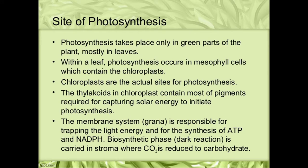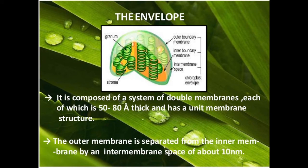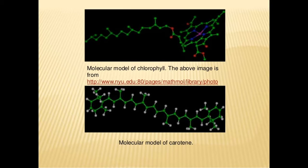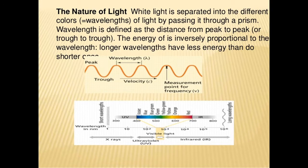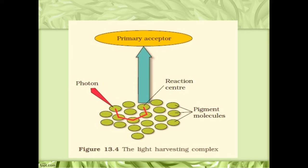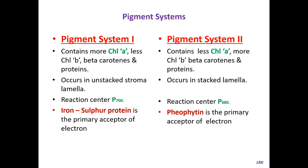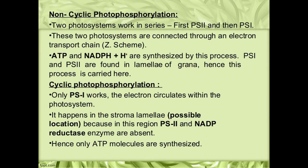Good morning, this is Ramesh Kumar Lalkota, Assistant Professor of Botany, MBS Government Arts and Science College Autonomous, Mahbubnagar. We are discussing the topic photosynthesis in plants. Till now we saw the structure of chloroplast, types of chlorophylls, structure of chlorophyll, difference between chlorophyll A and chlorophyll B, molecular models of chlorophylls, carotenes, differences between carotenes and xanthophylls. We also saw the nature of light, light harvesting complexes, pigment system one, pigment system two, light reactions — cyclic and non-cyclic photophosphorylation — and dark reactions, that is C3 cycle and C4 cycle.